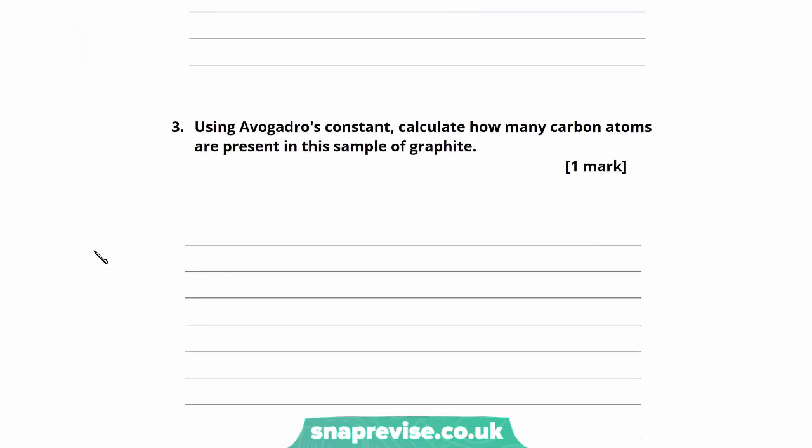Now the final part of the question is asking us to use Avogadro's constant to calculate how many carbon atoms are present in our sample of graphite. So we know that we have 0.0535 moles of our graphite. And we know that Avogadro's constant is 6.02 times 10 to the 23. We know that there are this many atoms in one mole. So if we want to work out how many atoms there are in this many moles, we do 6.02 times 10 to the 23 multiplied by 0.0535, the number of moles that we have. And that will give us 3.22 times 10 to the 22.